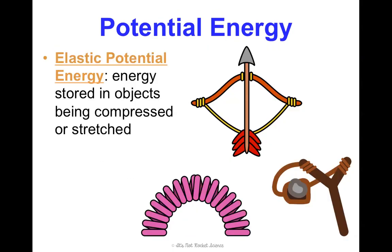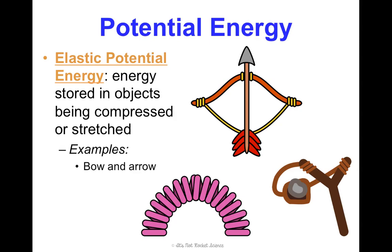Elastic potential energy is energy stored in objects that are being compressed or stretched. If you've ever pulled a slingshot, it's really tight — you can almost feel that energy stored, wanting to be released when you let go. Bows and arrows work the same way, and springs like slinkies do the exact same thing.